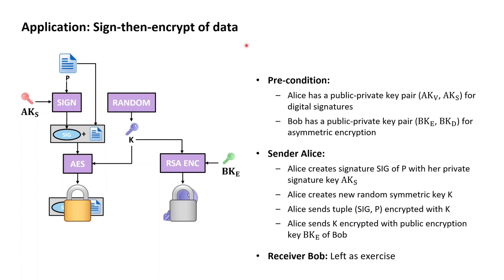In order to discuss this application, let's assume that Alice wants to send Bob an email that is both confidential — so that only Bob can read it — and that Bob can verify the email was sent by Alice. The precondition for this is that Alice owns a public-private key pair for creating and verifying digital signatures, and that Bob owns a public-private key pair for encrypting and decrypting data.